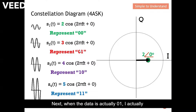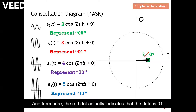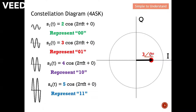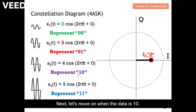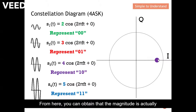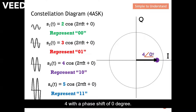When the data is 01, I increase the magnitude to 3, again with a phase shift of 0. The red dot indicates that the data is 01, with a magnitude of 3 and a phase shift of 0. Next, when the data is 10, the magnitude is 4. This is indicated by the purple dot, with a magnitude of 4 and a phase shift of 0 degrees.